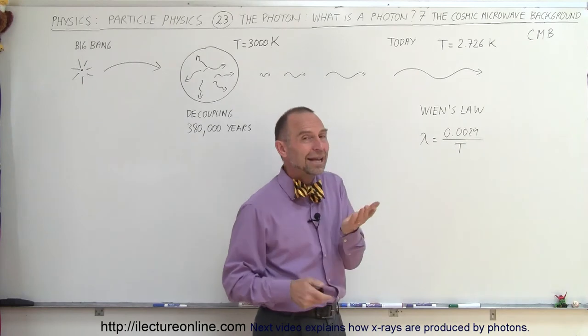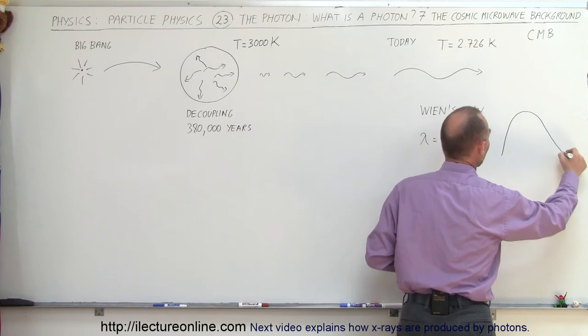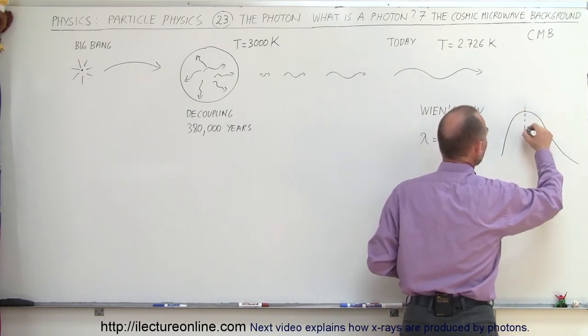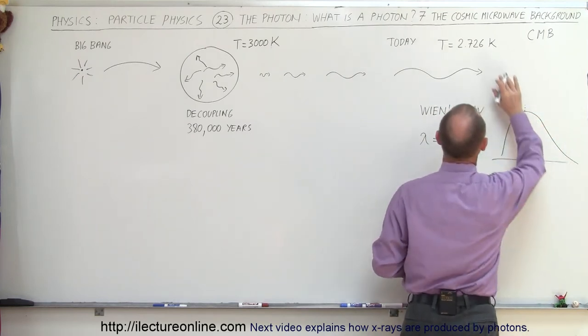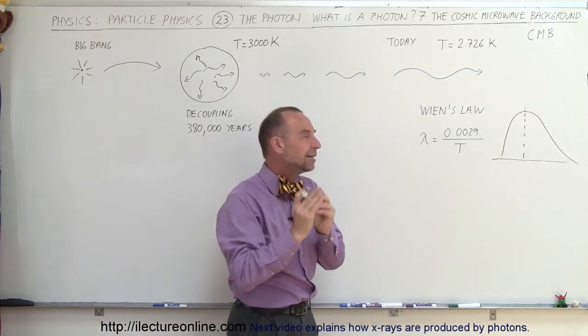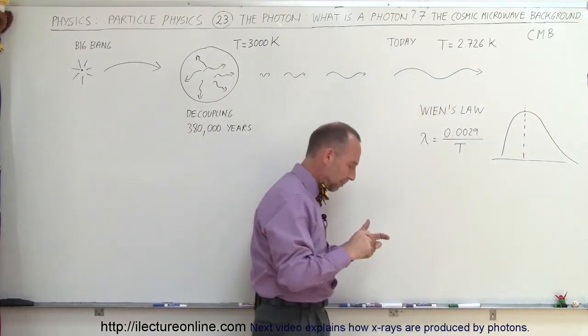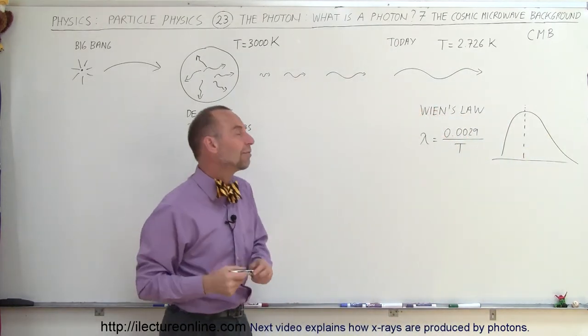Of course that radiation has the black body curve, the very peculiar black body curve like this. And of course the peak radiation is the one that corresponds to 2.726 Kelvin. But the band is fairly narrow and everything is very tuned to this particular wavelength on the black body curve. So let's find out what that wavelength is.